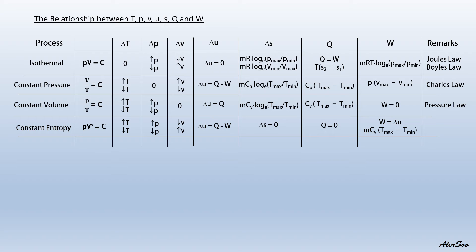Since Q equals zero, according to the non-flow energy equation, work equals the change of internal energy, given by Cv times (T-max minus T-min). In the case of enthalpy change, that is H, you use Cp delta T. The constant entropy process is also known as an adiabatic or isentropic process. Adiabatic refers to a perfectly thermally insulated system with no heat flow, which is equivalent to an isentropic process representing constant entropy.